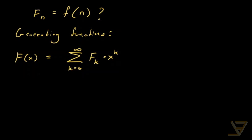Now let's work on this series a little bit. We know that the first term is 0, so the term with index 1 is equal to just x. We can pull that out — you'll see why we're doing that in just a moment. Then we have the sum from k equals 2 through infinity of f(k) times x to the k.